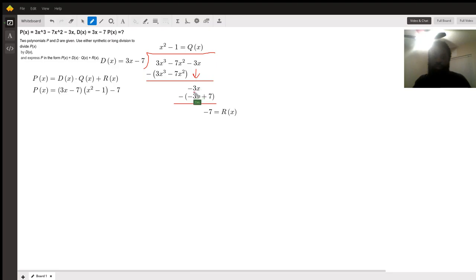Then we divide negative 3x by positive 3x to give us negative 1. Then we multiply negative 1 times negative 7 to give us positive 7.